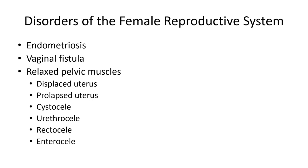Displaced uterus: the normal uterus lies with the cervix at a right angle to the long axis of the vagina, and the body is slightly inclined forward — anti-flexed over the bladder. Displacement can be congenital or caused by childbirth. Terms used to describe uterine displacement include retroversion and retroflexion. With retroversion, the uterus is aligned with the vagina and points toward the sacrum. With retroflexion, the uterus is flexed even further backward.